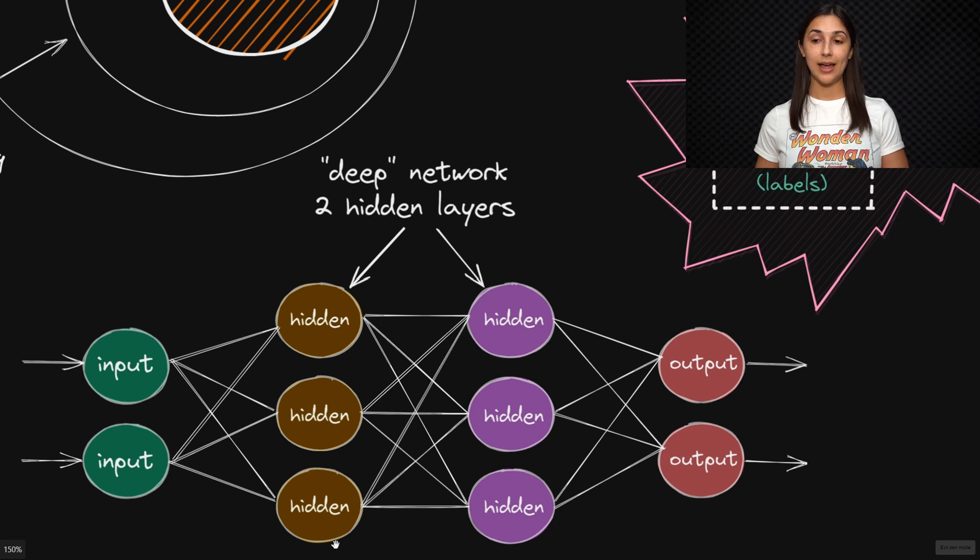The processing that occurs happens over a series of layers, which are illustrated here with these vertically grouped nodes. When we have more than one of these hidden layers in the middle of the network, the network is considered deep, and that's where the word deep in deep learning comes from.